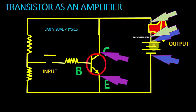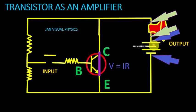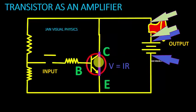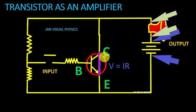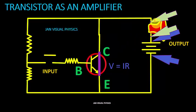When the transistor is fully conducting, that is when the transistor is switched on, the resistance of the transistor is very small, and according to Ohm's law the voltage drop across the transistor is very small. So the maximum portion of this voltage drops across our load.